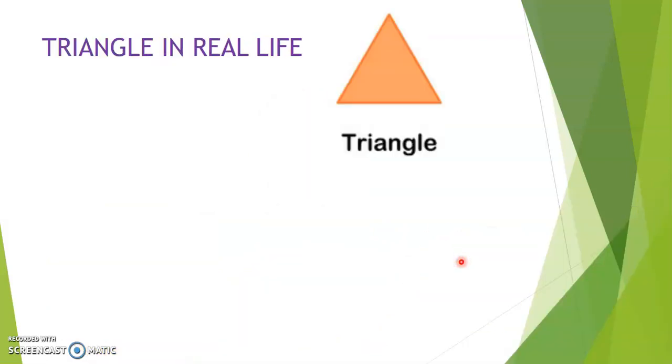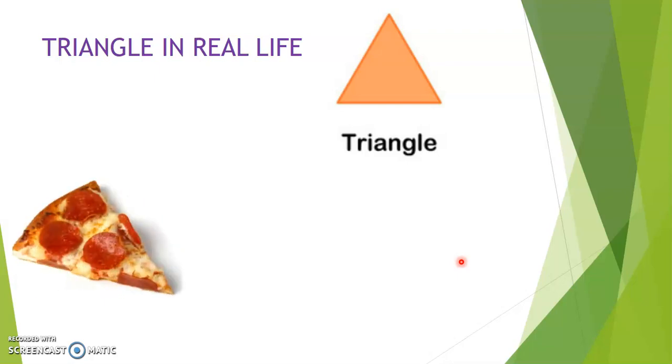Next we have a triangle. A triangle has three sides. Triangle in real life. Can you find a triangle in real life? Yes, this is a triangular piece of pizza. And it is much easier to eat a triangular piece of pizza than eating a circular pizza.